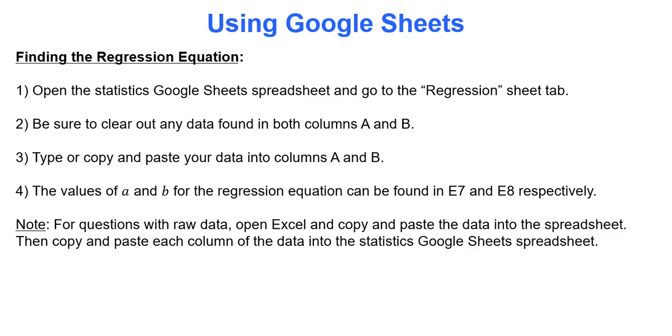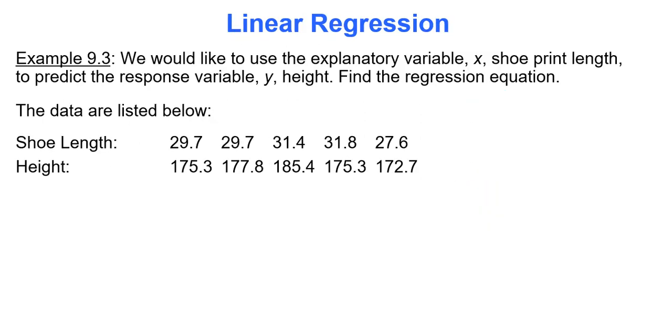So how are we going to find this regression equation? We're literally going to go to the regressions tab in Google Sheets. We'll type in our data in columns A and B, and the values for a and b, the values for our regression equation, will be found in E7 and E8. We would like to use the explanatory variable x, shoe print length, to predict the response variable y, which is height. All they want us to do here is find the regression equation.